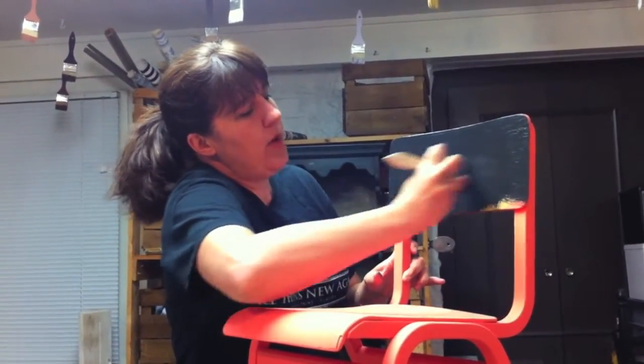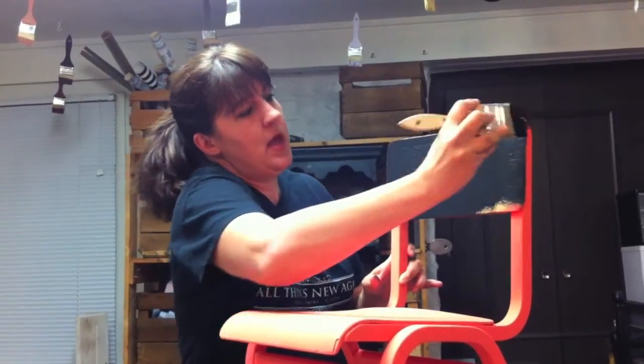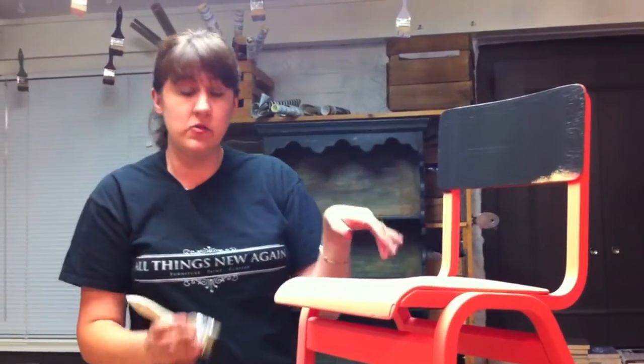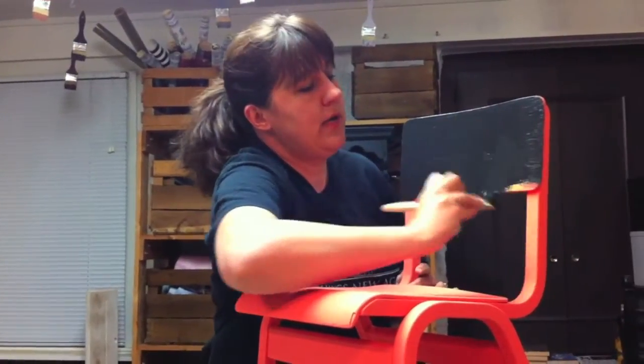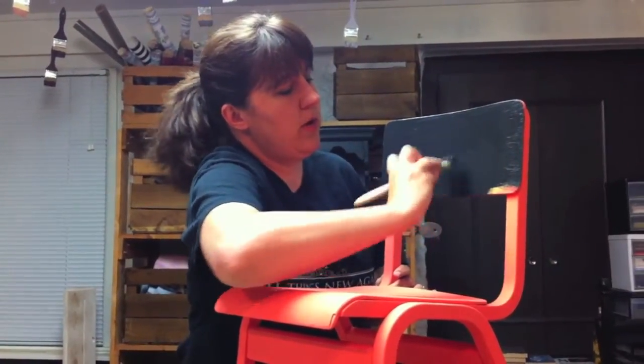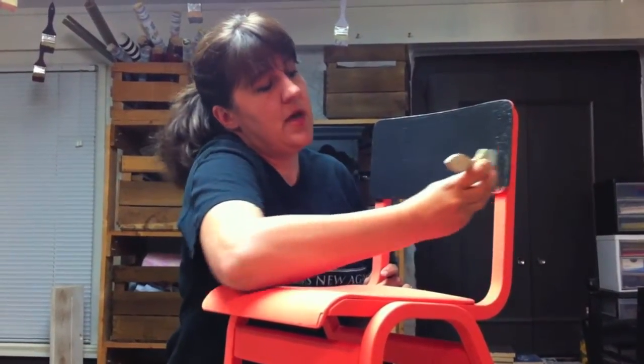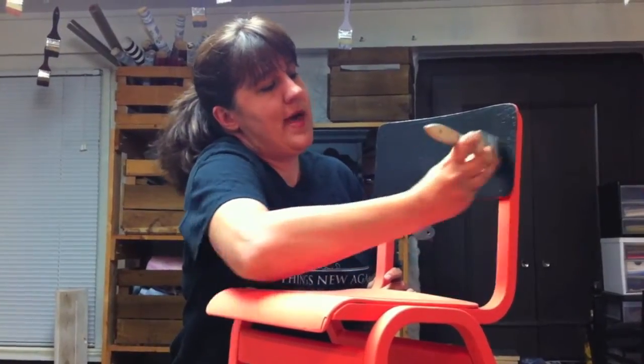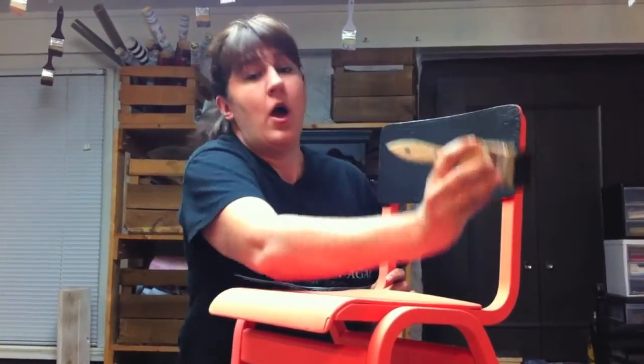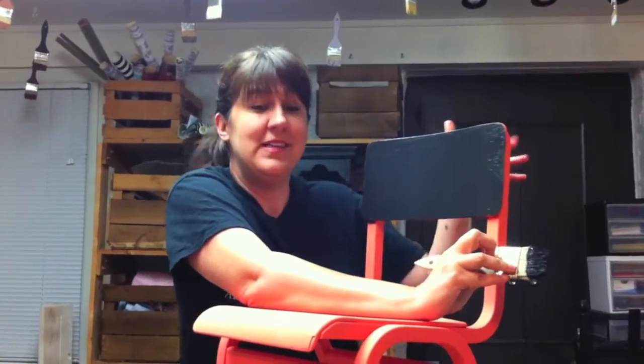So I've put one coat on. I'm going to let this dry, come back and put another coat on. To get the chalkboard look, you need about three coats, and then when that is all dry, I'll show you what you need to do to season it.